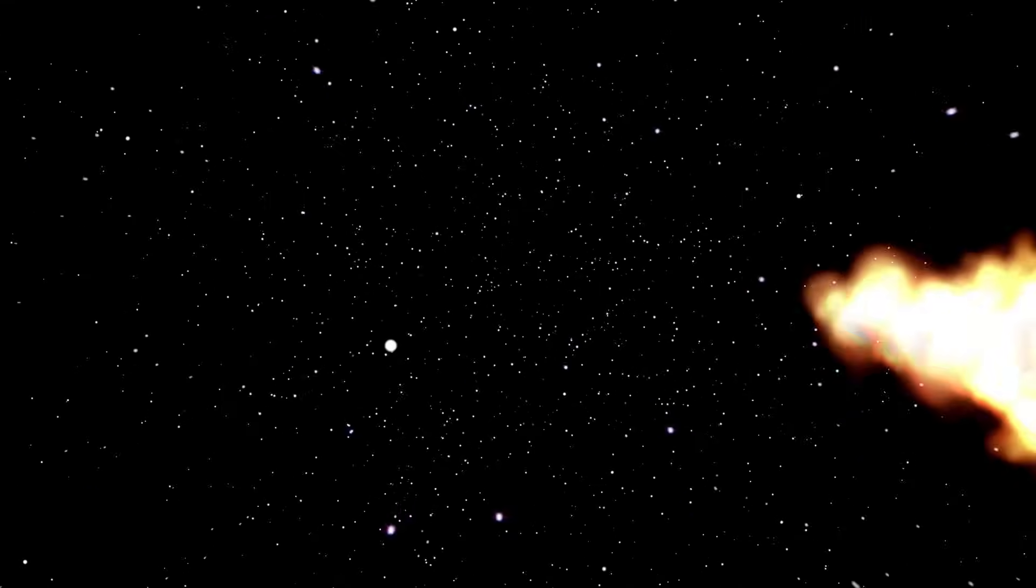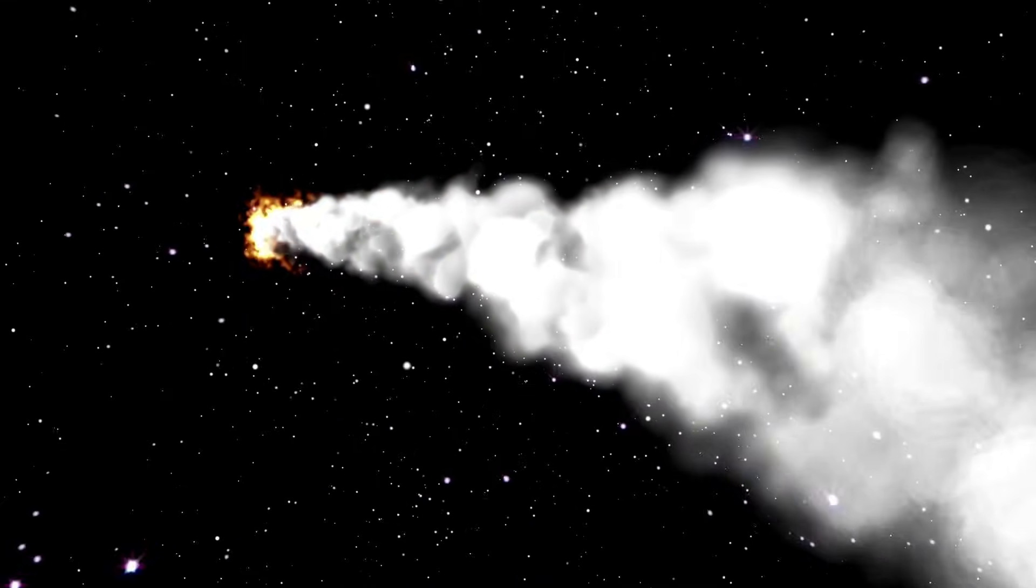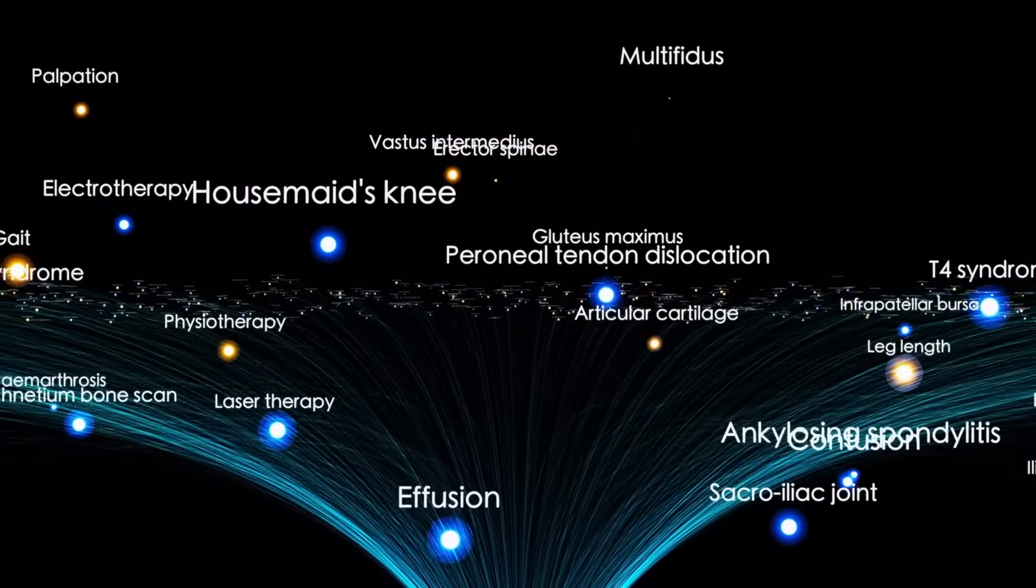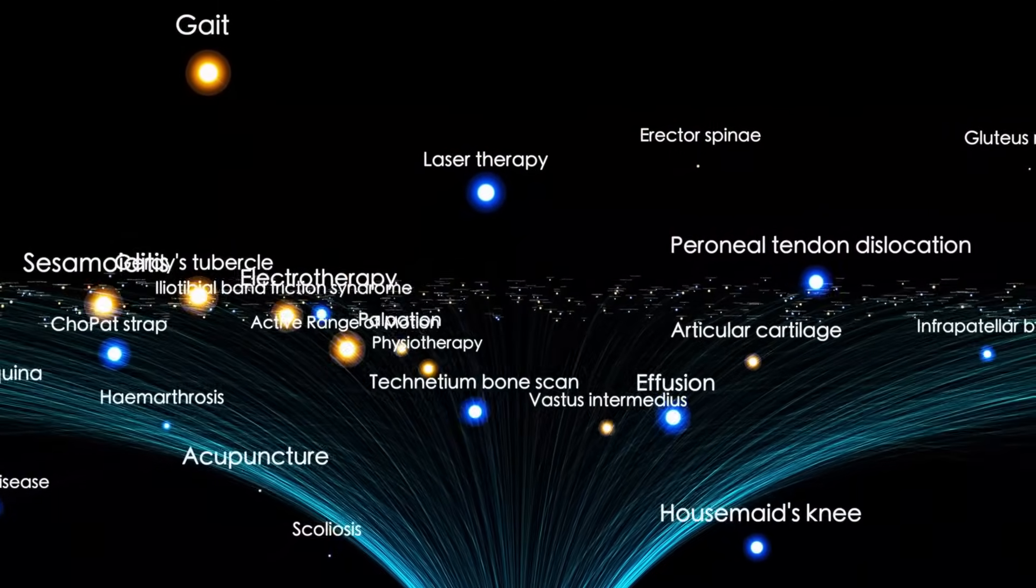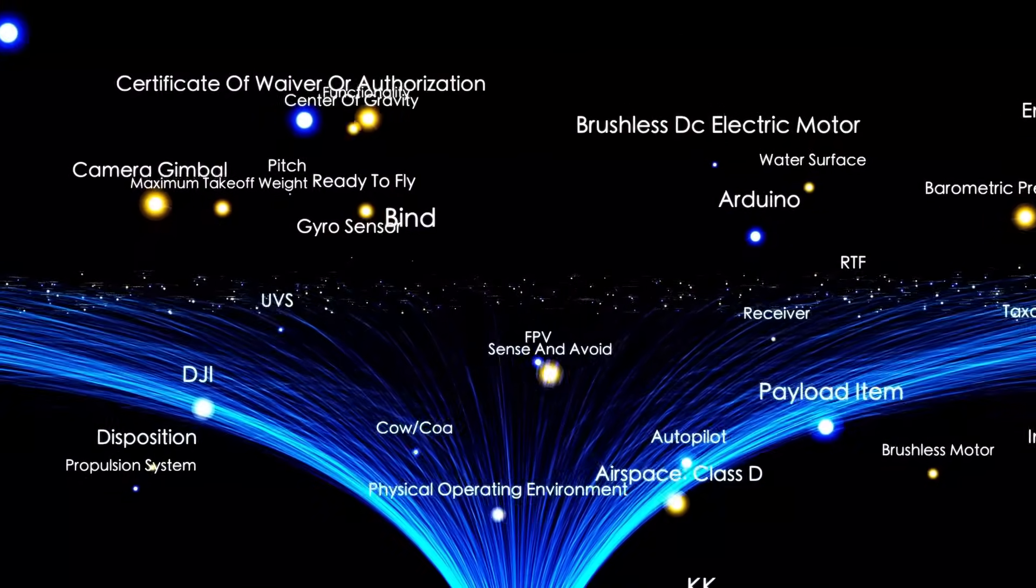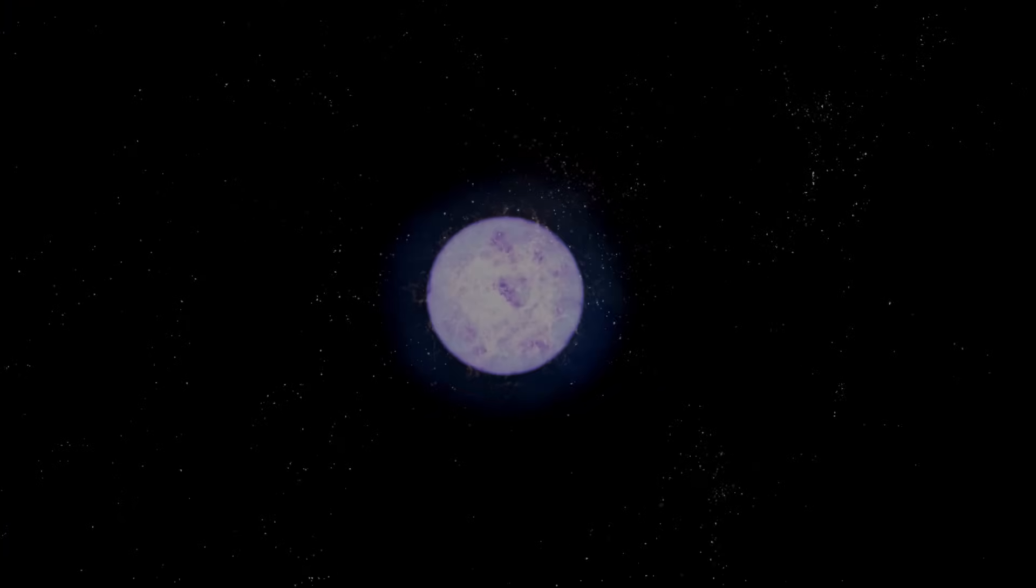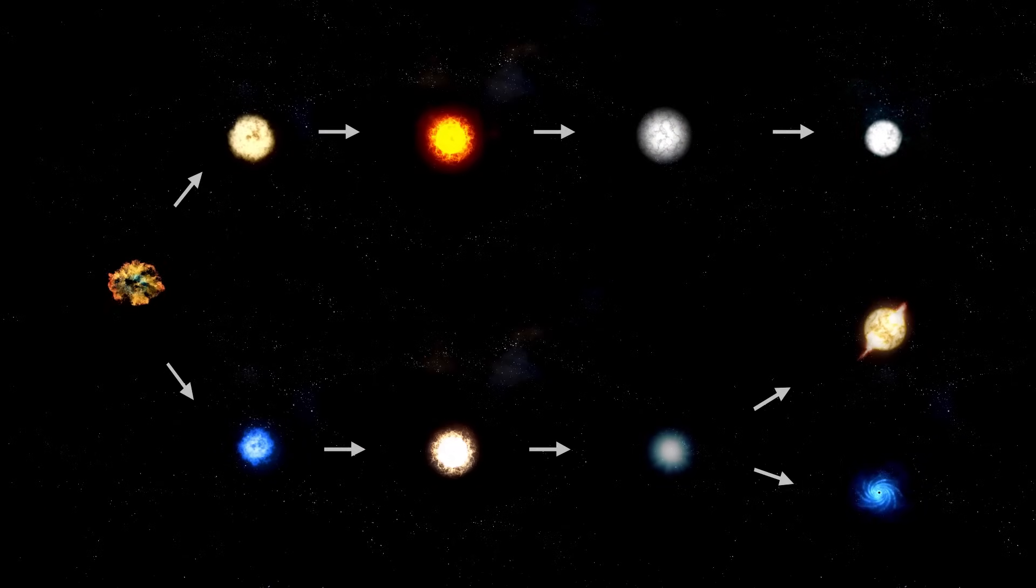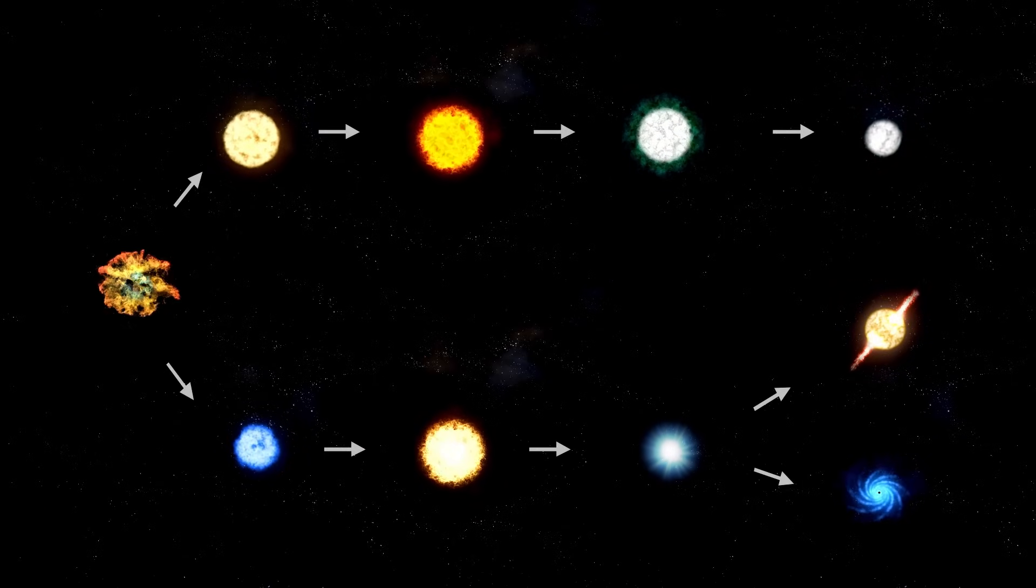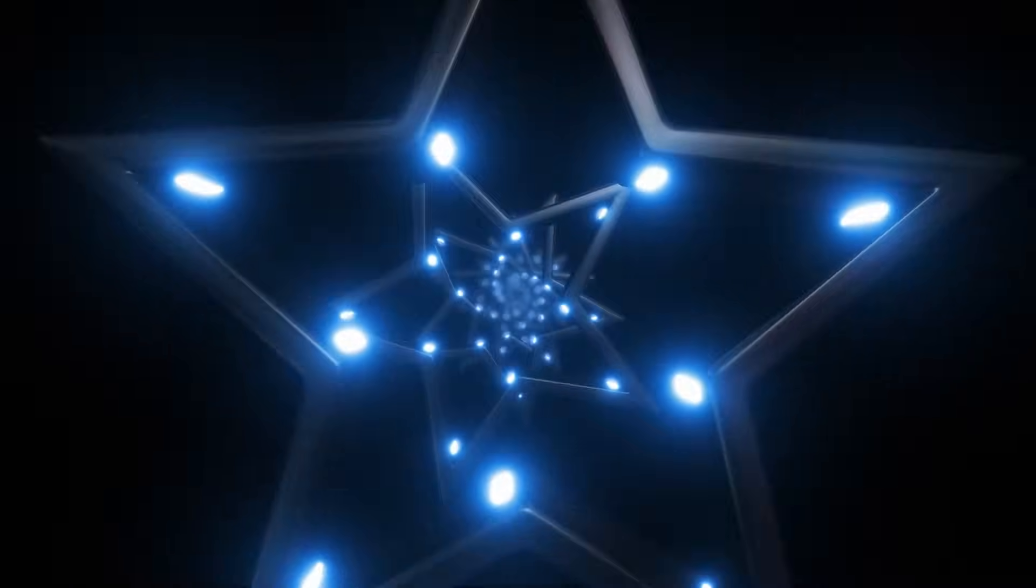More than just enormous, Betelgeuse is in a critical stage of its life known as the red supergiant phase. After billions of years fusing hydrogen into helium, it is now burning through heavier elements and slowly losing mass. Despite being around 8 to 8.5 million years old, a relatively young age in human terms, it's ancient by stellar standards. Massive stars like Betelgeuse live fast and die young, and its current state signals that the end may be near.